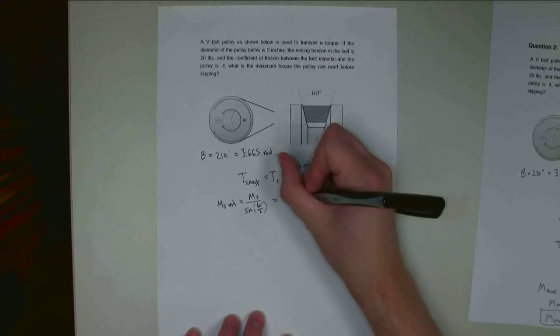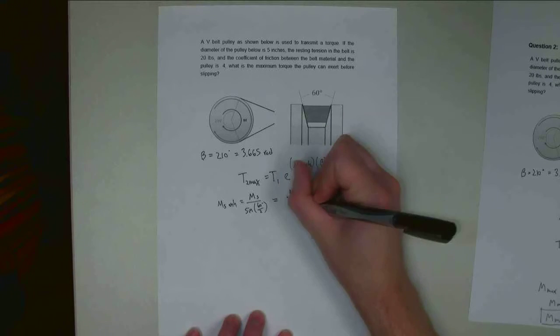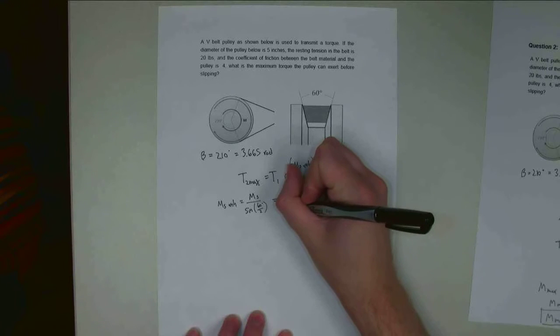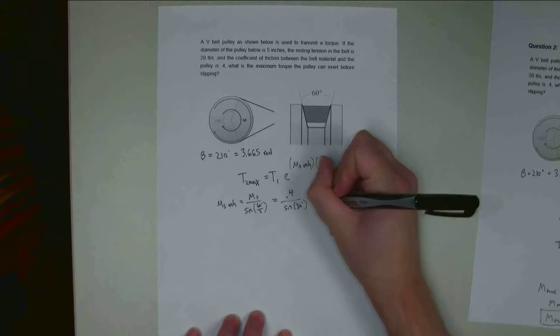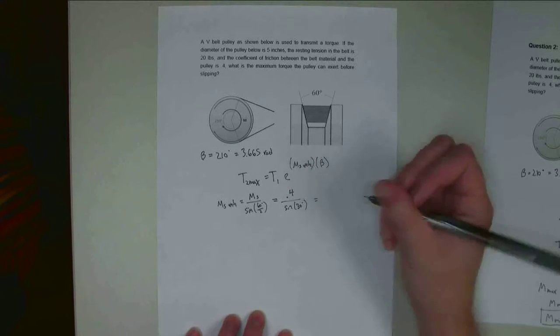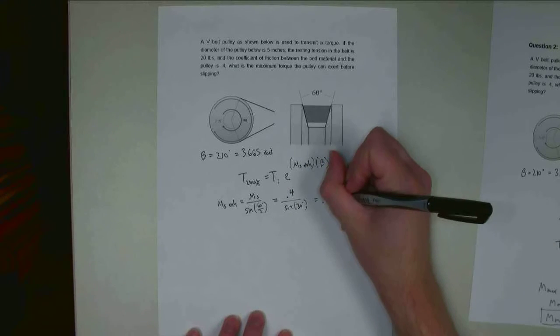So if I plug in numbers, mu static is 0.4. It's going to be the sine of 60 over 2 is 30 degrees. I get an enhanced static coefficient of friction of 0.8.